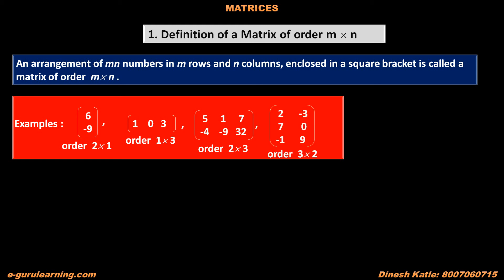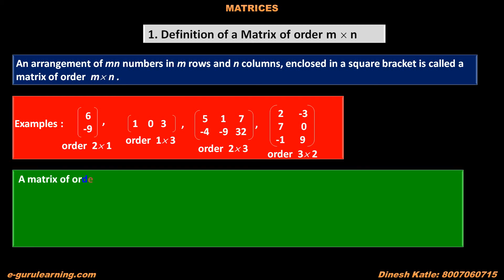The 4th matrix also contains six elements. In the first row: 2, minus 3. In the second row: 7, 0. And in the third row: minus 1, 9. This matrix has three rows and two columns, so its order is 3 into 2.